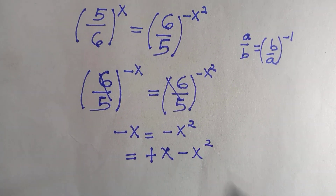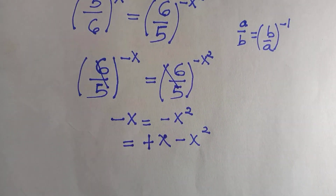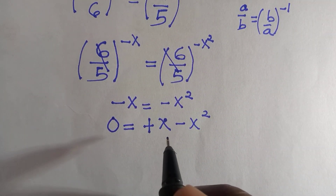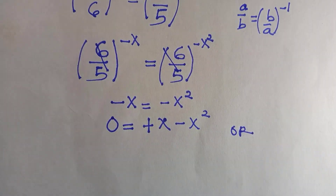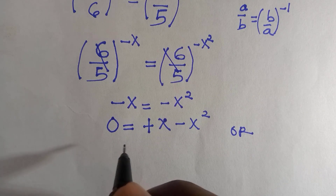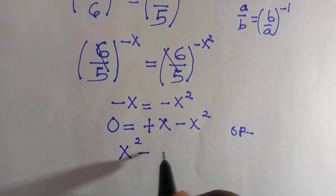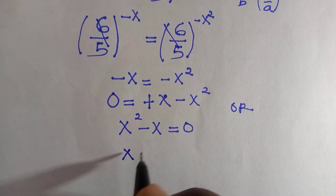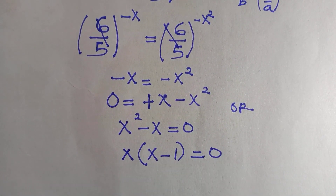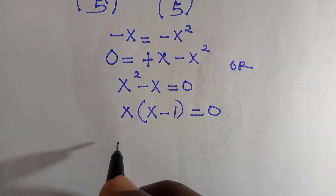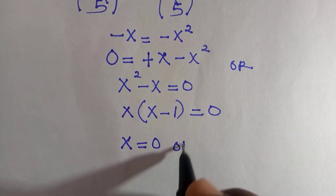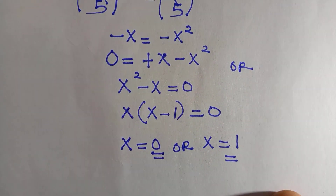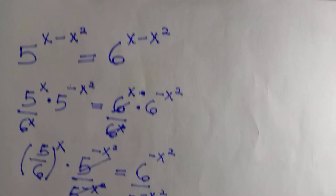By doing this we have zero equals negative transferred, which becomes positive x minus x squared. We can also write it starting with x squared: transferring x squared gives x squared minus x equals zero. This is a quadratic expression — a binomial — and we take x out, leaving x times x minus one equals zero. So x equals zero, or x minus one equals zero. The final answers are x equals zero or x equals one. These two roots satisfy the equation.